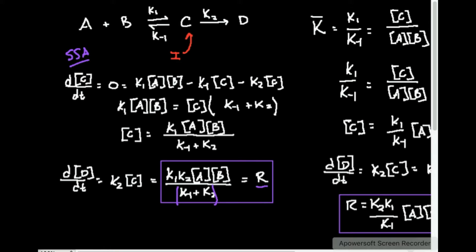What we have here is A, our first reactant, and B, our second reactant, and those are in equilibrium with our intermediate C. As I talked about in the previous video, the intermediate is pretty much always the thing in the middle. Normally the first reaction goes to it, and then the second reaction gets rid of it and goes to a product. So D is our product.